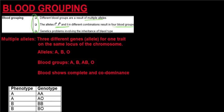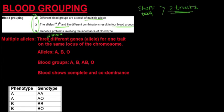You also need to be able to do genetic problems involving the inheritance of blood type. A multiple allele, with regards to blood, refers to three different alleles for one trait on the same locus of a chromosome. Using Mendel's pea plants as an example, pea plants were either short or tall — two alleles on a locus — or green or yellow. Now we are looking at something with three alleles for a specific locus.